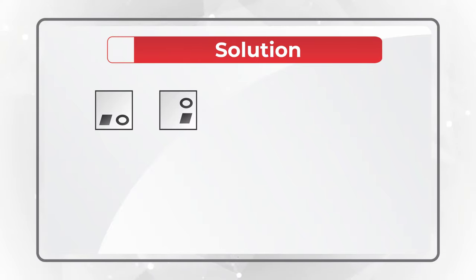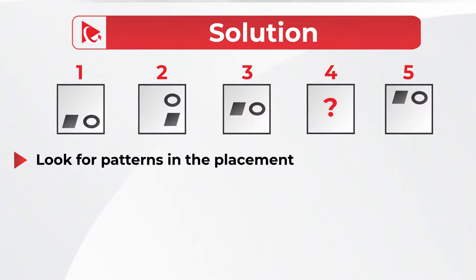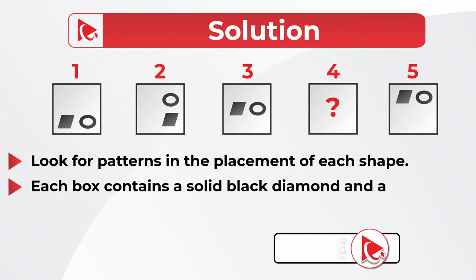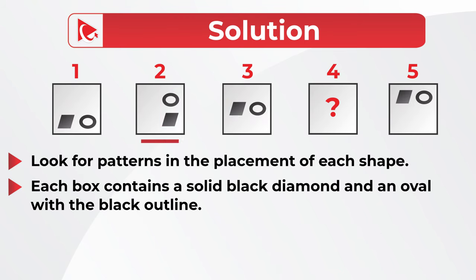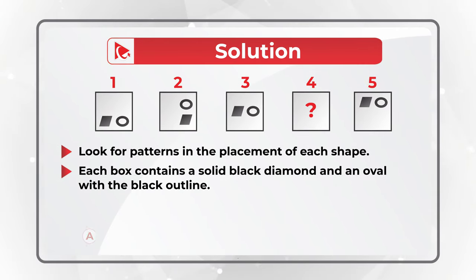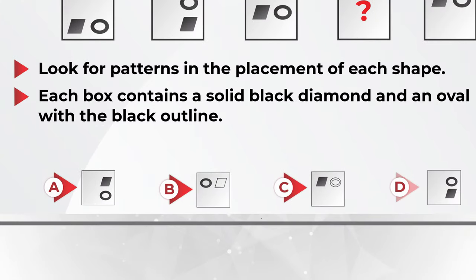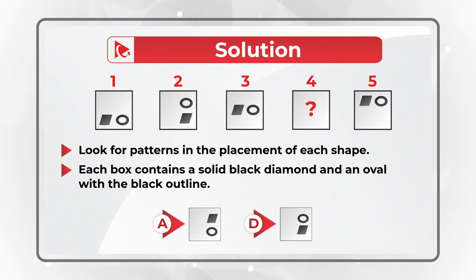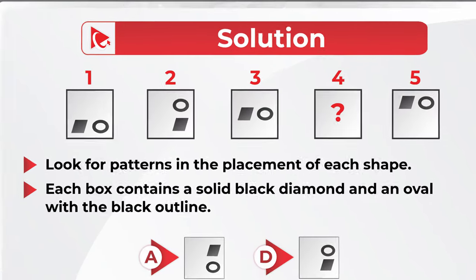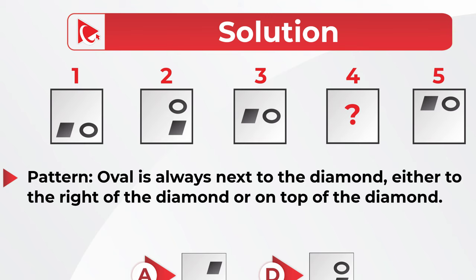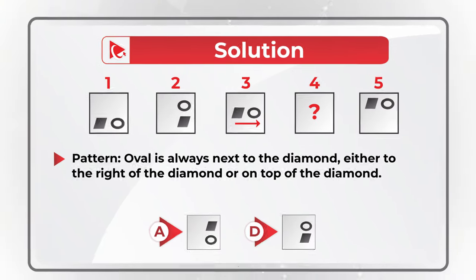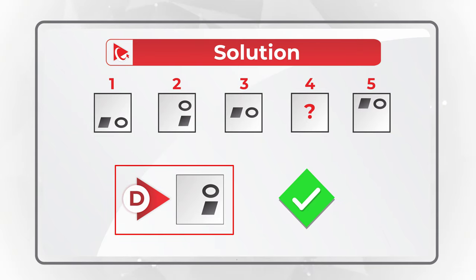Always look for patterns. The pattern here is the location of smaller shapes inside each square. The smaller shapes are always a diamond filled with black and an oval with a black outline — this is consistent for shapes 1, 2, 3, and 5, which excludes choices B and C. The second pattern is that the oval is always next to the diamond — either to its right or on top. Based on this, the correct choice is D.